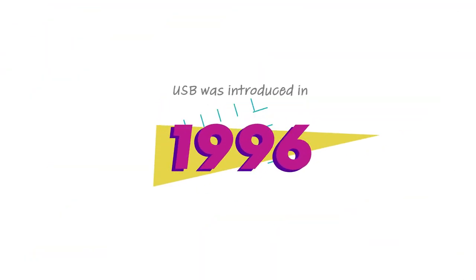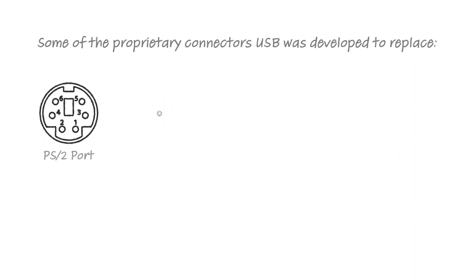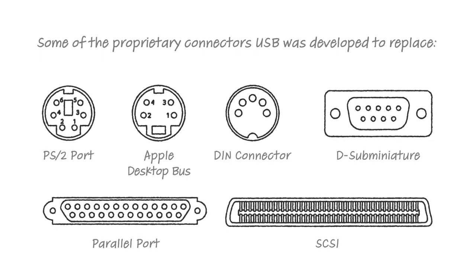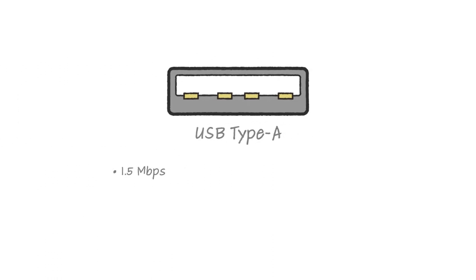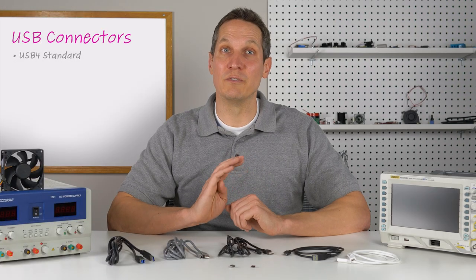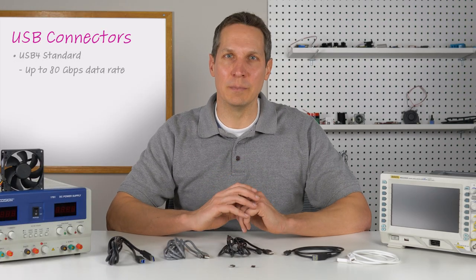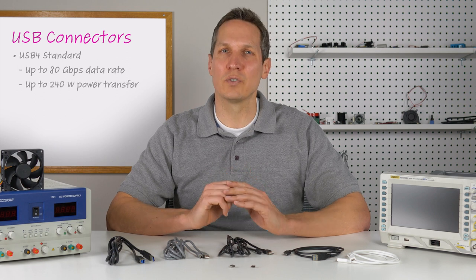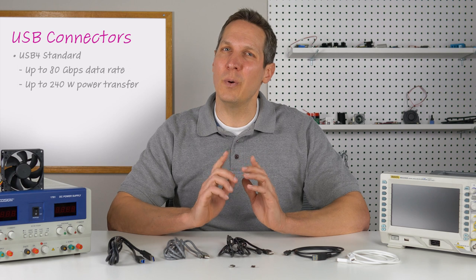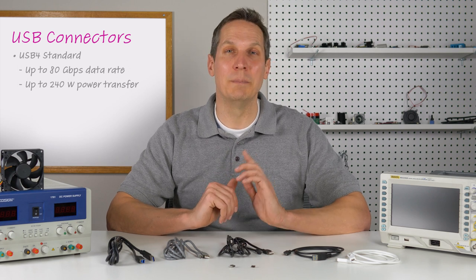When USB was first introduced in 1996, it was just intended to replace the variety of serial and parallel options and their many proprietary connectors. At 1.5 megabits per second, which was around 3 to 20 times faster than options available at that time, USB provided both a faster option and a single unified connector. The newest USB 4 standard is now up to 80 gigabits per second and, with USB power delivery, can also transfer up to 240 watts.